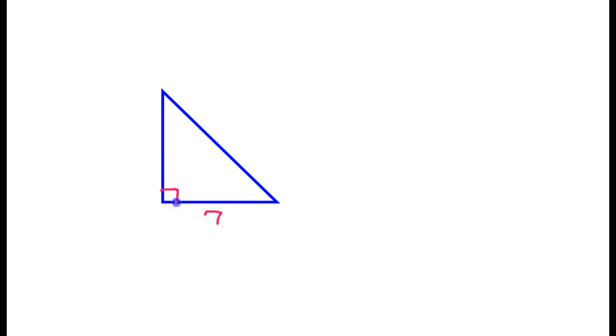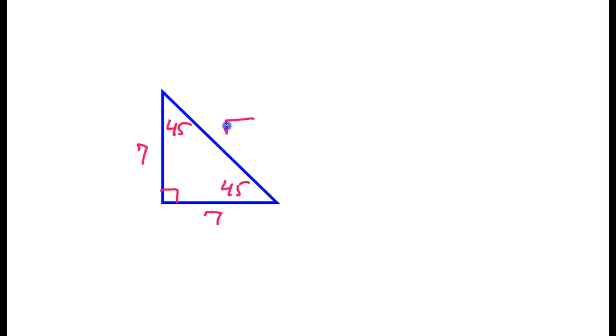For example, let's say if one side of this is 7, and this is a 45-45-90 triangle, then I know the other side is going to be 7 and the hypotenuse is going to be 7 radical 2. That's how the pattern works.